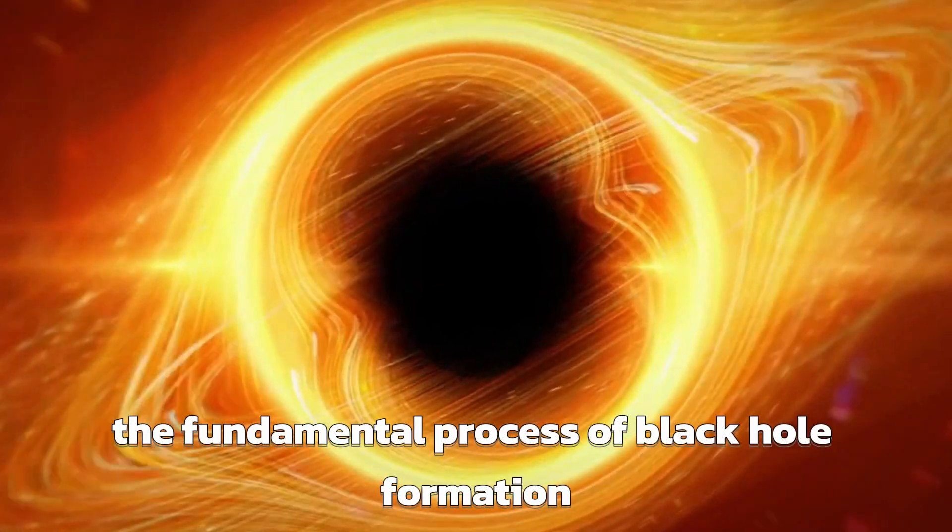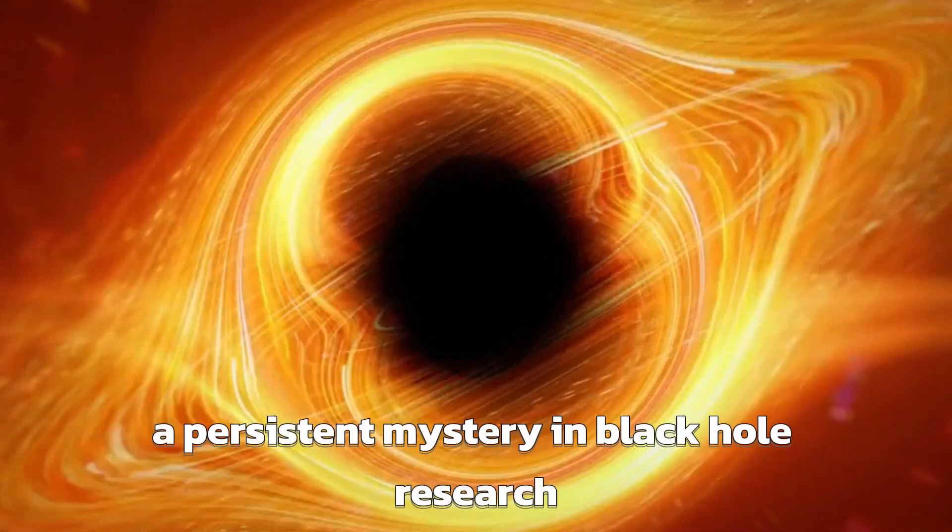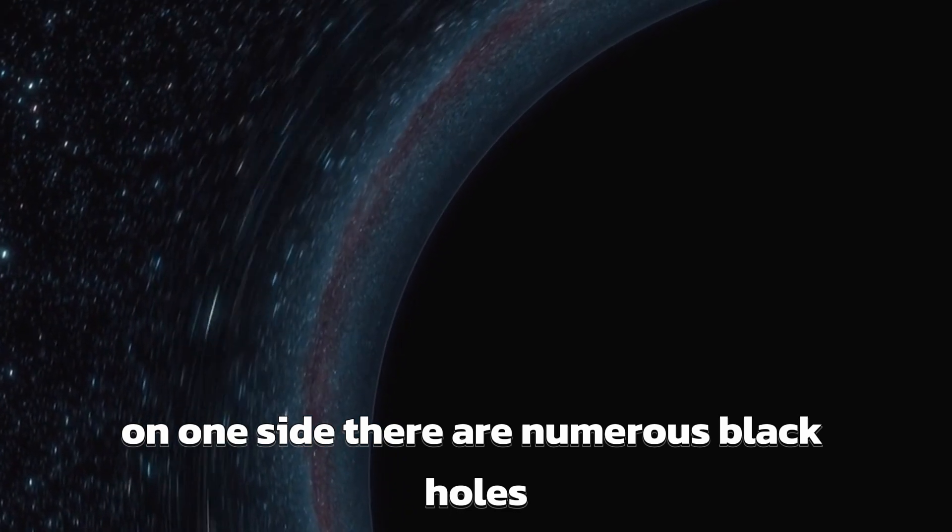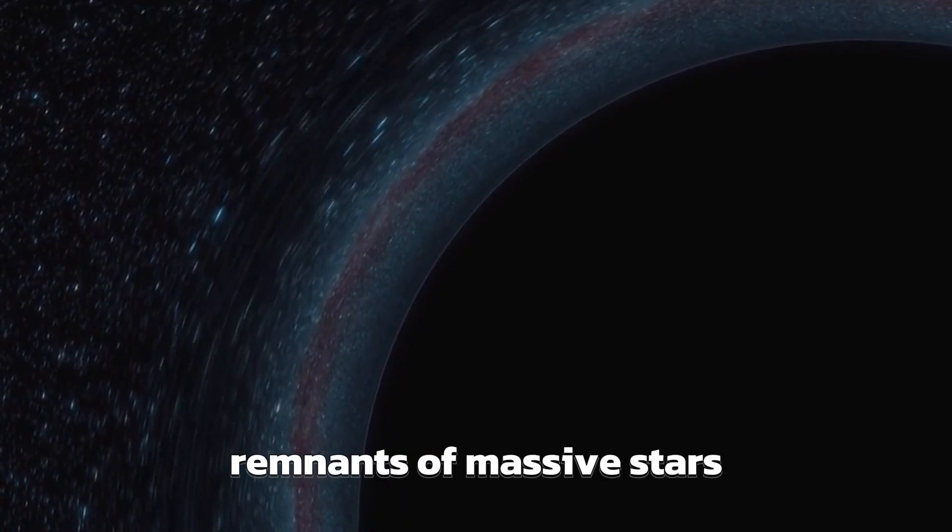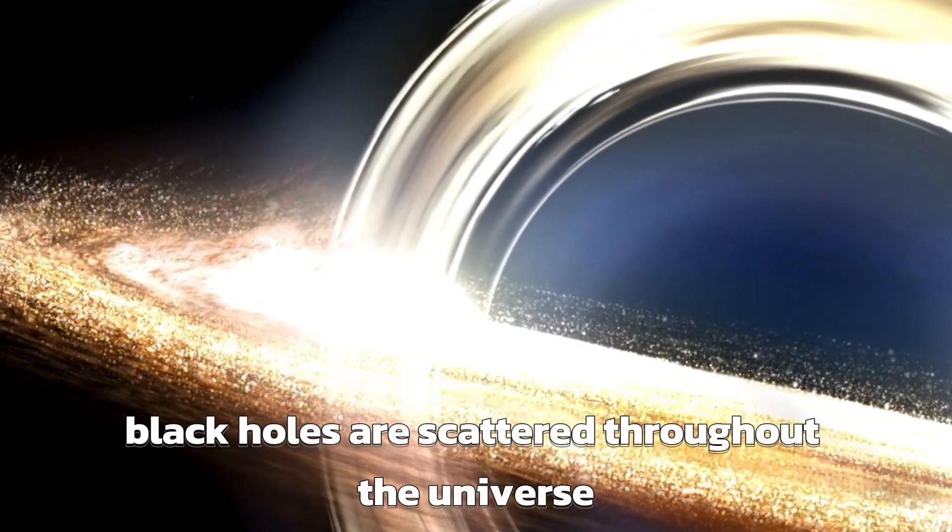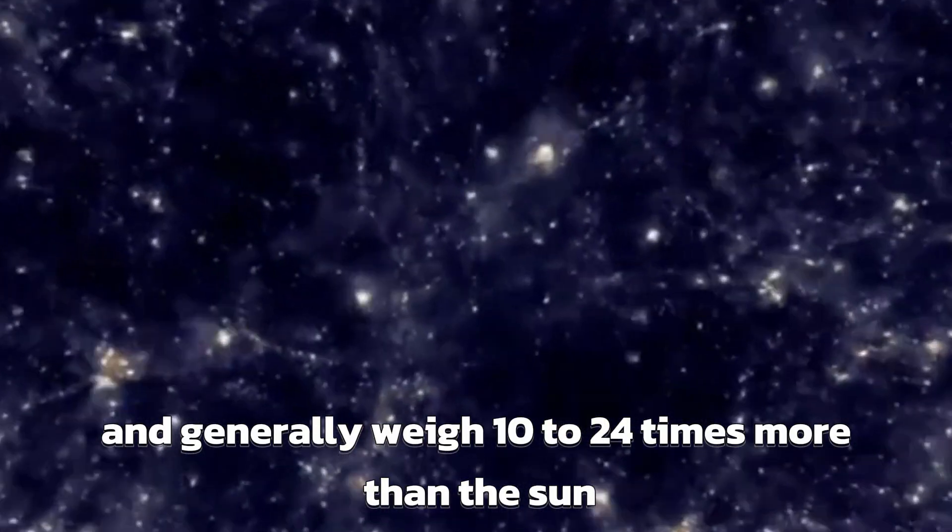Although the fundamental process of black hole formation is understood, a persistent mystery is that they appear in two vastly different size categories. On one side, there are numerous black holes, remnants of massive stars. These black holes, referred to as stellar mass black holes, are scattered throughout the universe and generally weigh 10 to 24 times more than the sun.